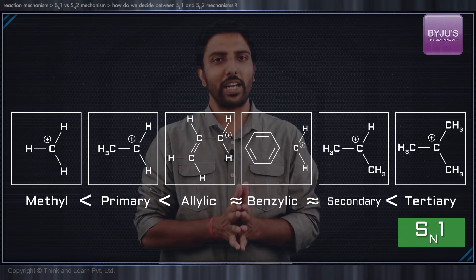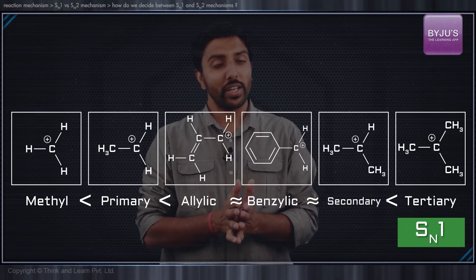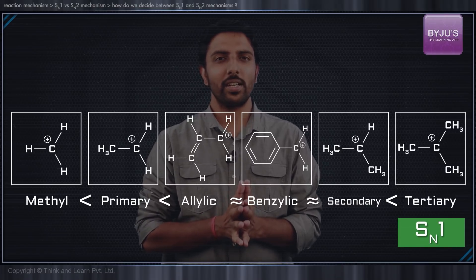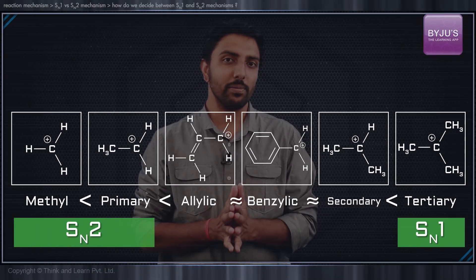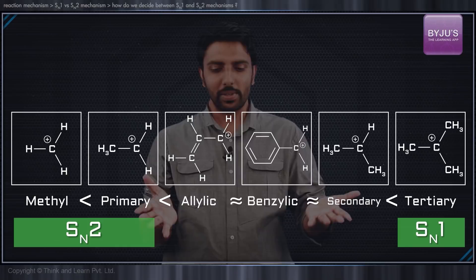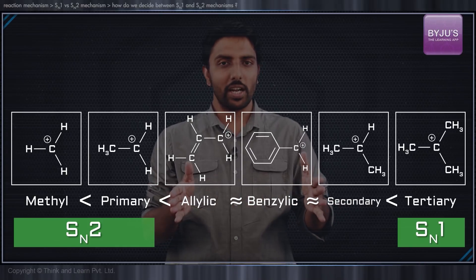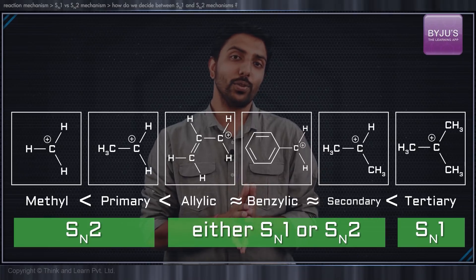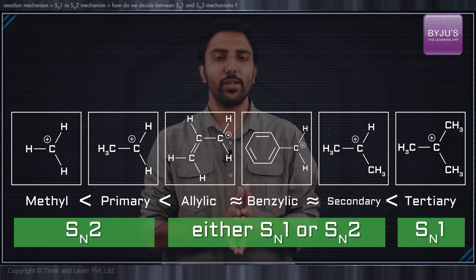If we look at the tertiary substrates, they readily undergo SN1 mechanism, whereas if we look at the methyl as well as primary substrates, they undergo SN2 mechanism much more readily. But what can we say about these three which are in the middle? These three can either choose the SN1 pathway or SN2 pathway.